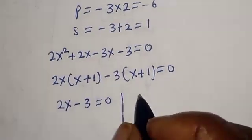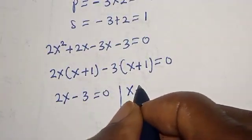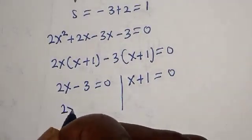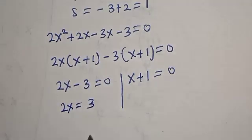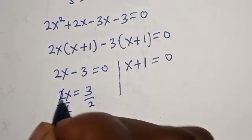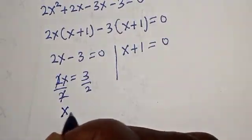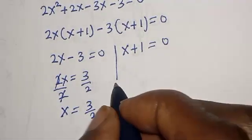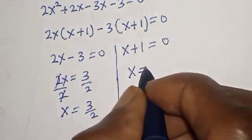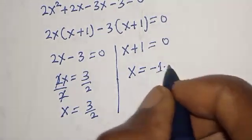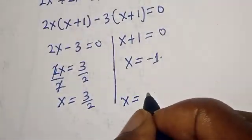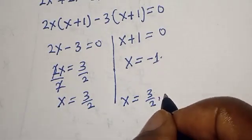So we have 2s minus 3 equals 0, or s plus 1 equals 0. From here, 2s equals 3; dividing both sides by 2, s equals 3 over 2. Or from here, s equals minus 1.